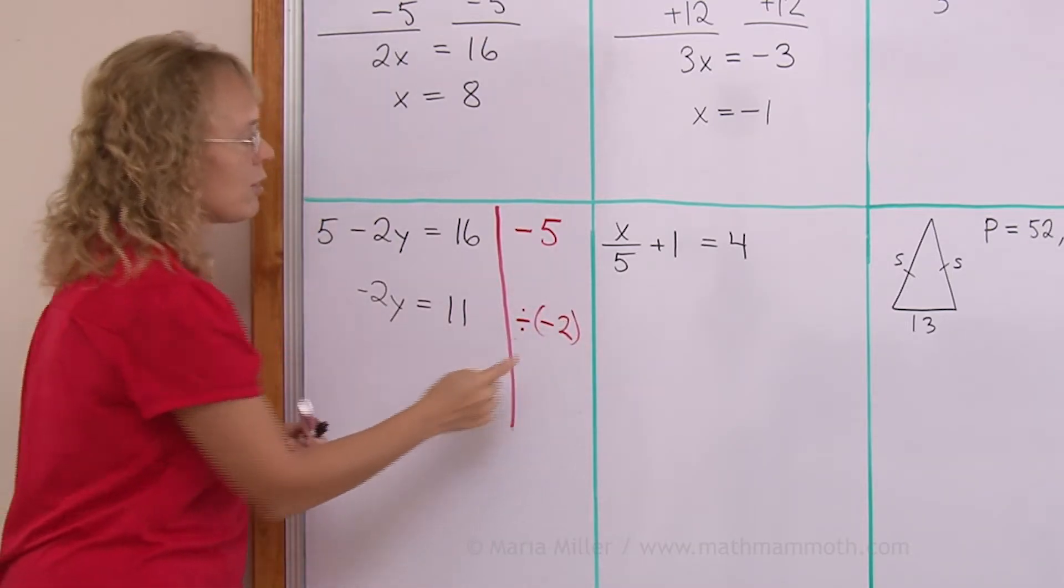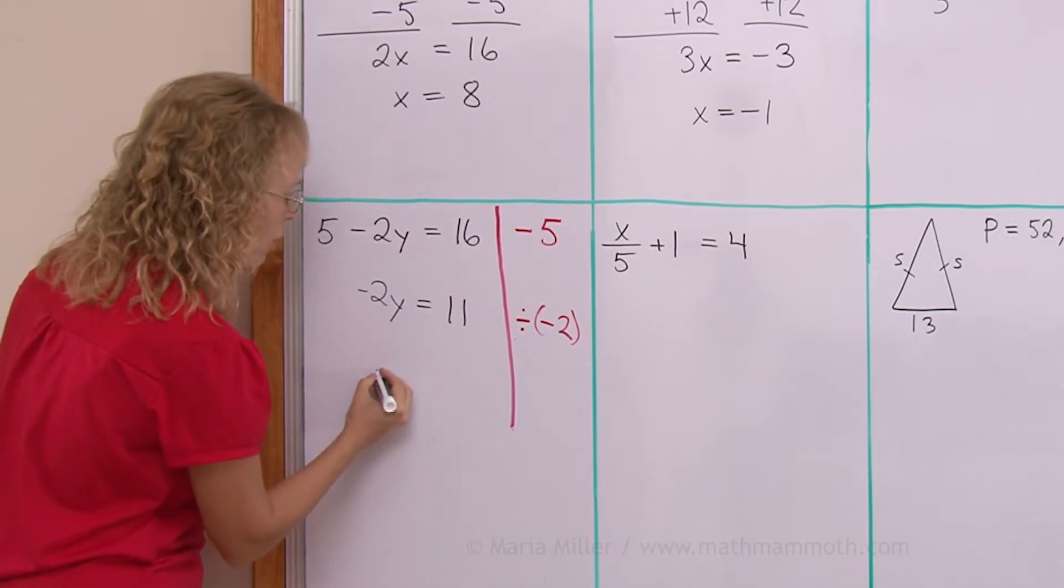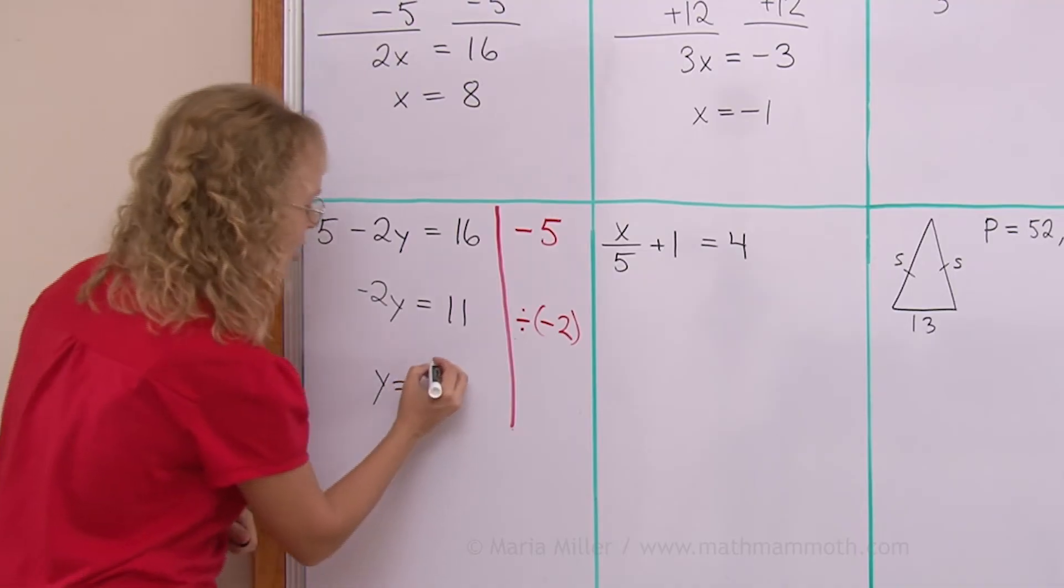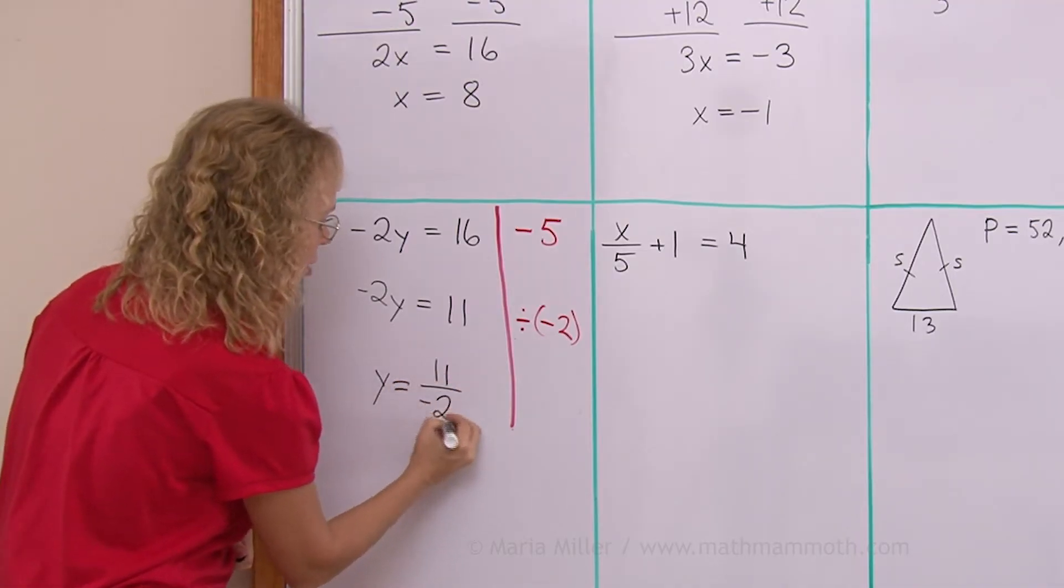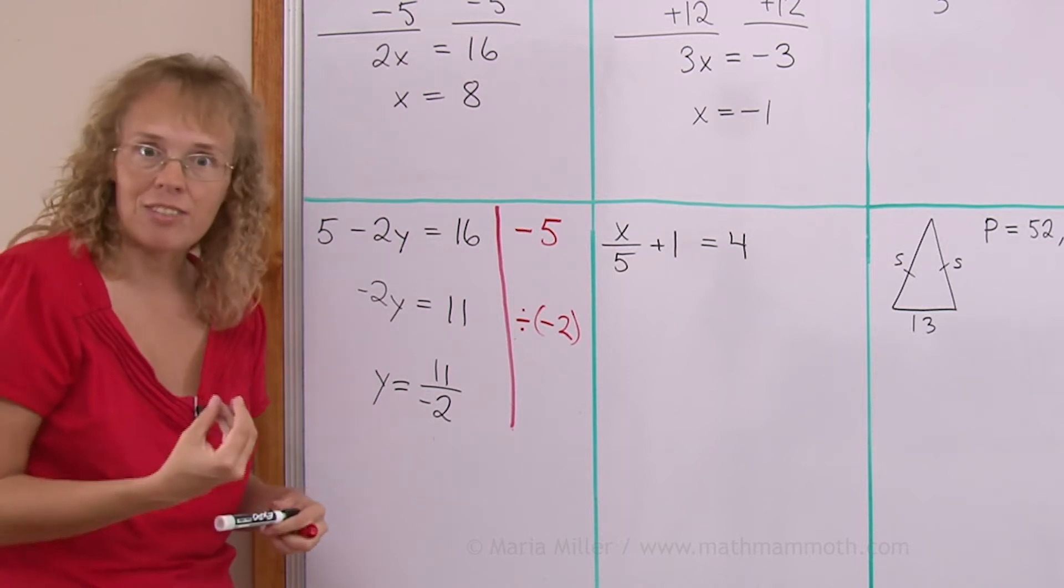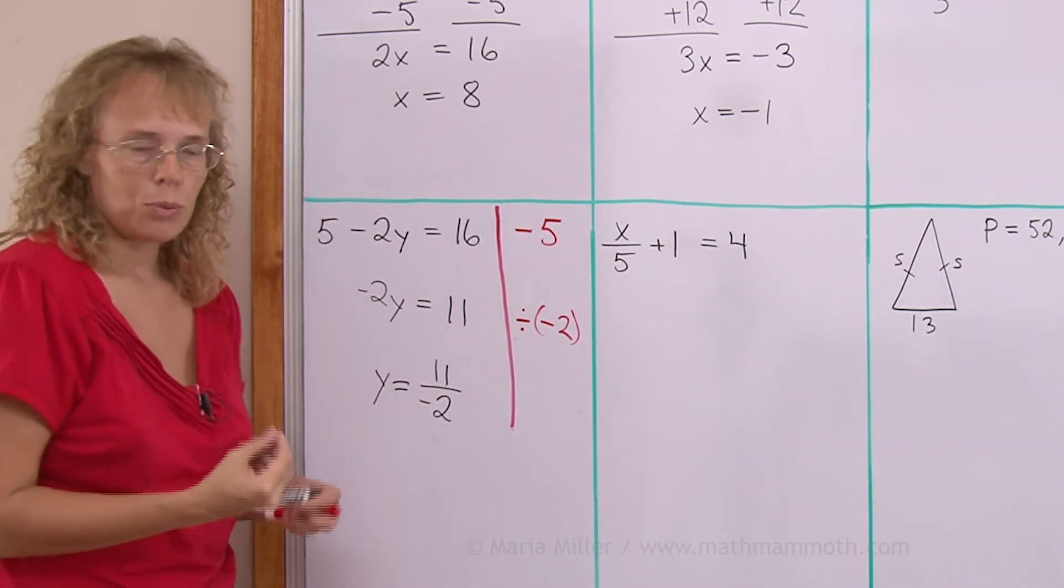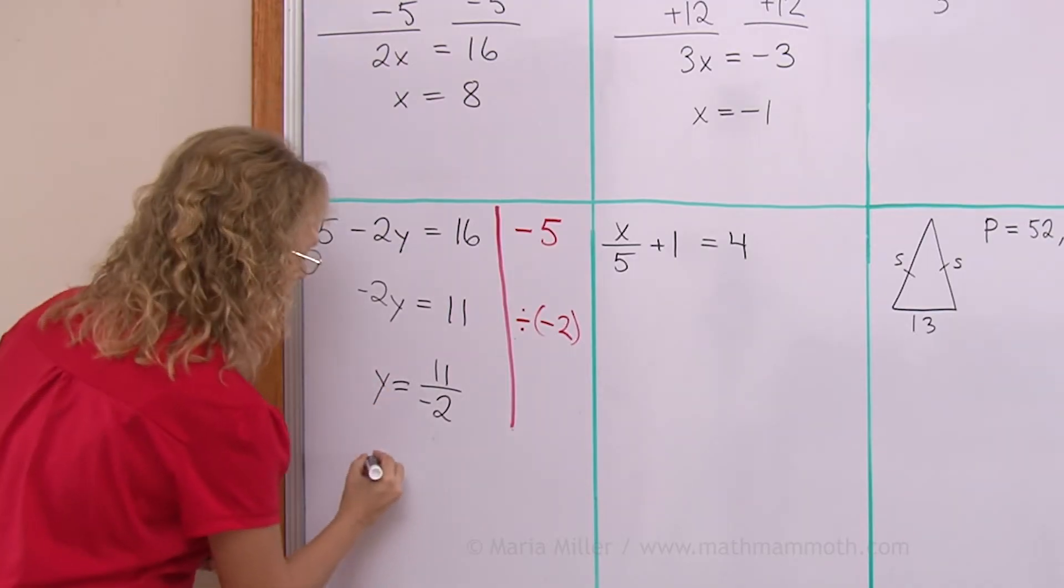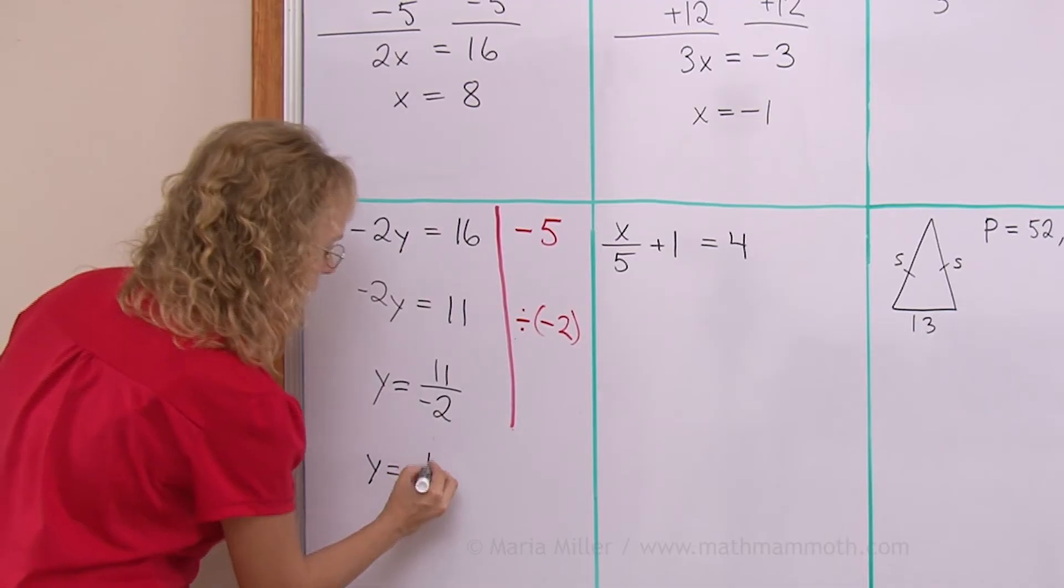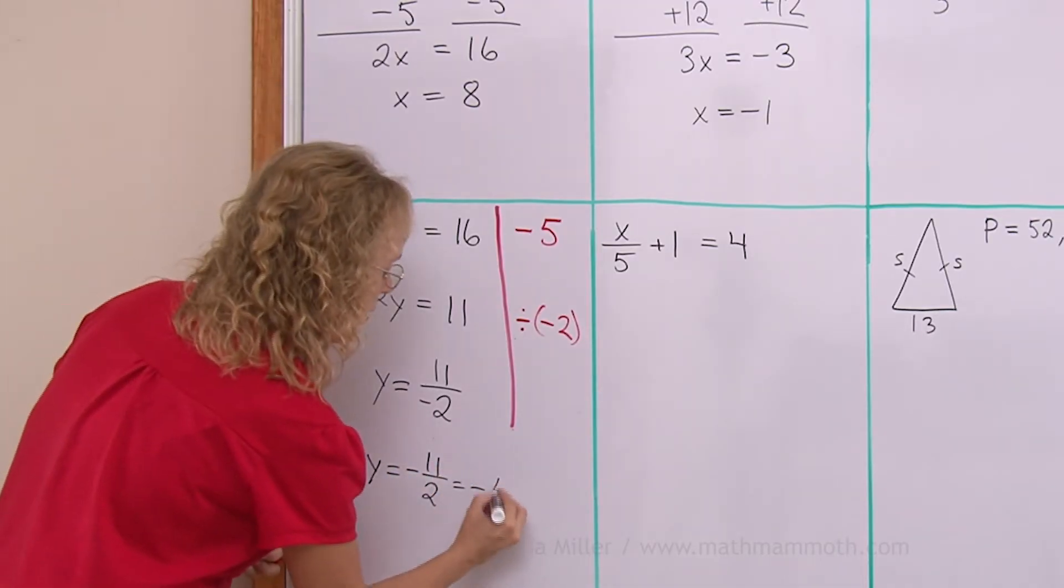So I need to undo that by dividing both sides by negative 2. Divide both sides by negative 2 is what this means here. After that I will be left with y alone on this side. That's what I want. Now here I do the division 11 divided by negative 2. That's gonna give me a fraction. A negative fraction. It's gonna be a negative 11 over 2. But I can give it as a mixed number. It's negative 11 over 2 or negative 5 and a half.